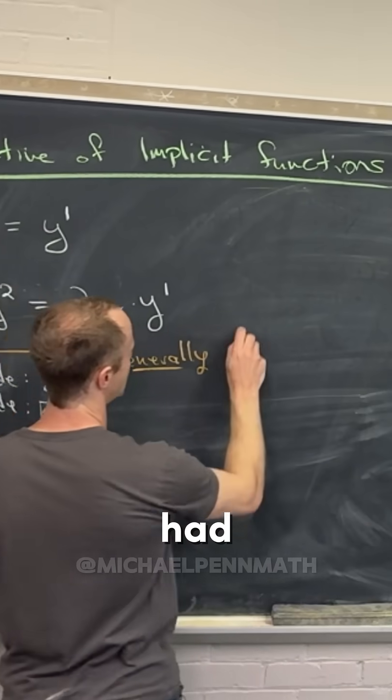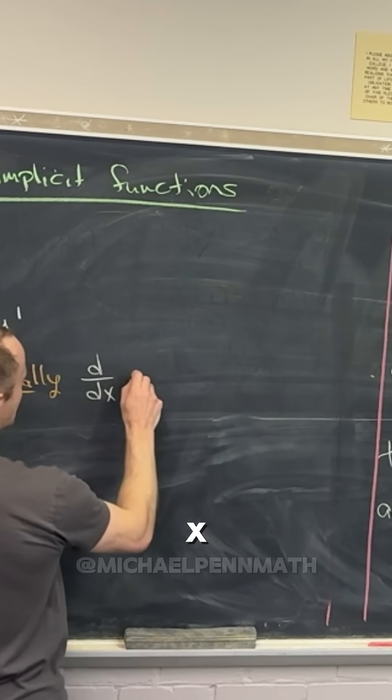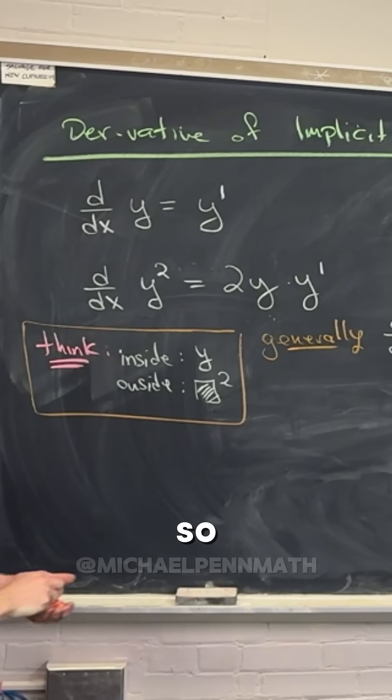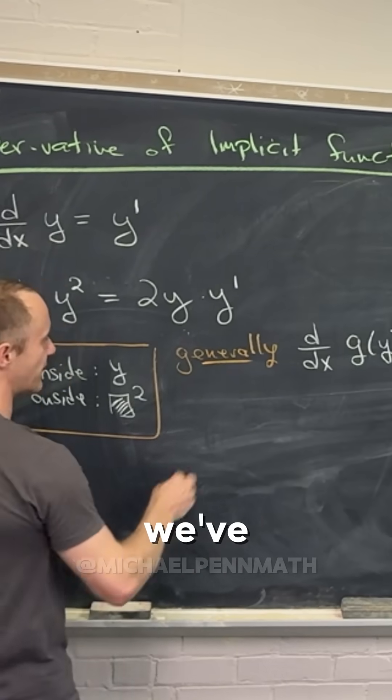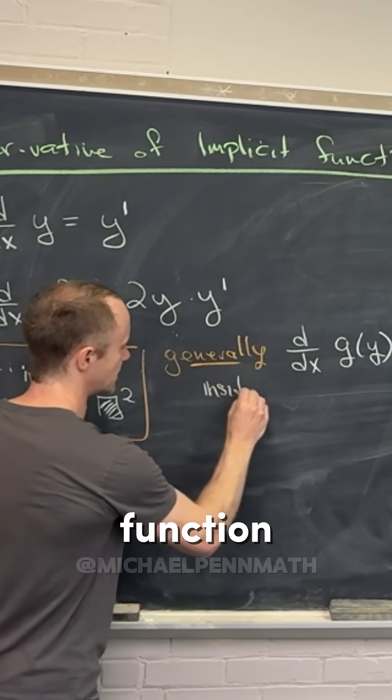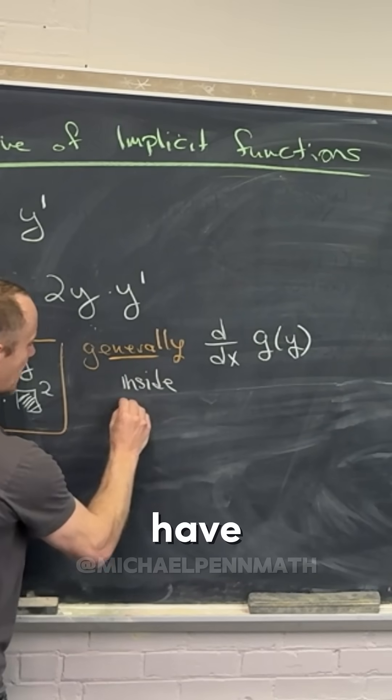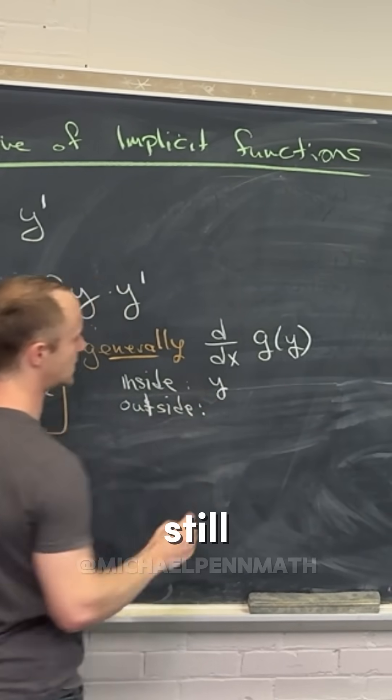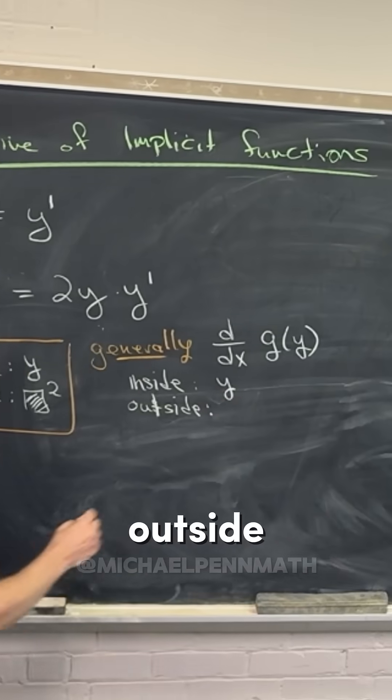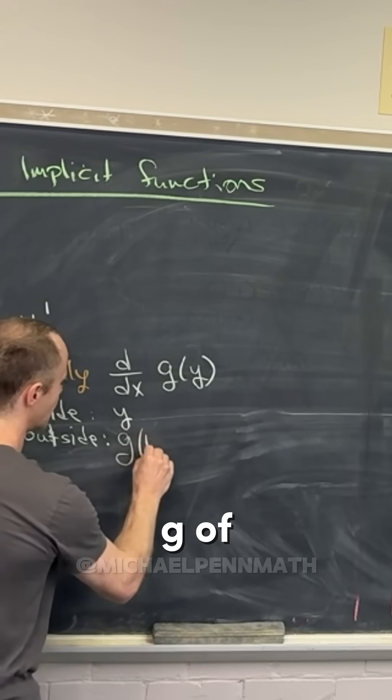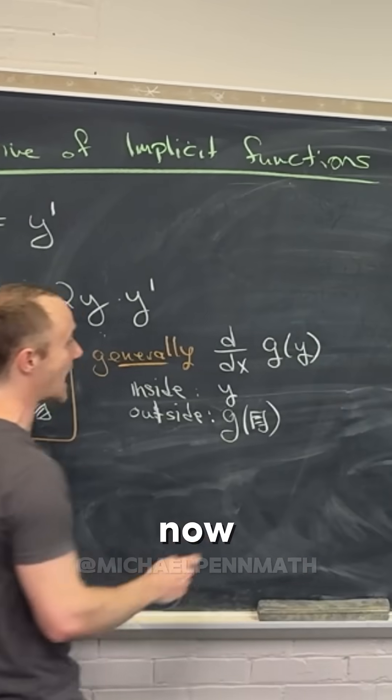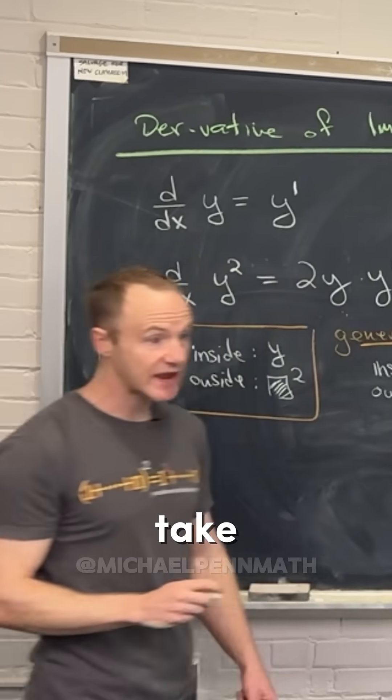If we had the derivative with respect to x of, for instance, g of y, so again we've got some sort of inside function and we also have some sort of outside function. The inside function is still just y, and then the outside function is our g of something. But now we can take the derivative using the chain rule.